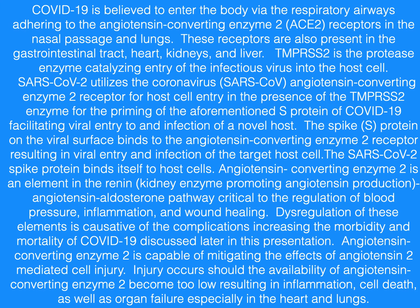COVID-19 is believed to enter the body via the respiratory airways, adhering to the angiotensin-converting enzyme II receptors in the nasal passage and lungs. These receptors are also present in the gastrointestinal tract, heart, kidneys, and liver.